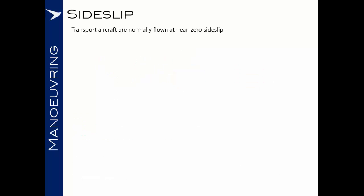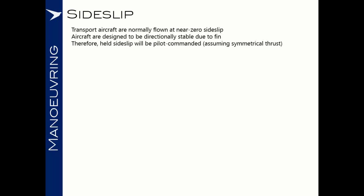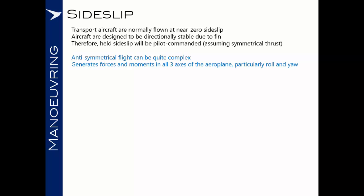Looking now at sideslip — transport aircraft are normally flown at near zero sideslip, and aircraft are designed to be directionally stable due to the vertical stabiliser. Therefore, if we do find an aircraft in sideslip, it will be pilot-commanded, assuming we still have symmetrical thrust. If we find ourselves no longer in directionally symmetrical flight, the dynamics can be very complex, generating large forces and moments in all three axes, particularly in roll and yaw.